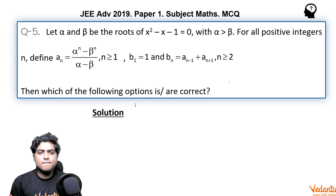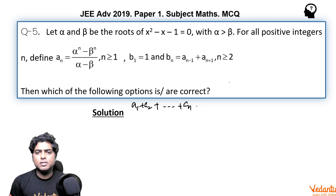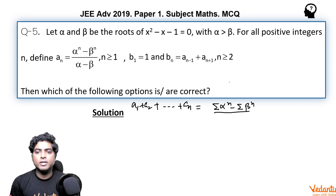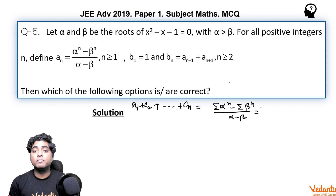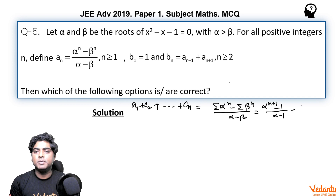I can write a_1 + a_2 + ... + a_n as (Σα^n - Σβ^n) / (α - β), where the sigma runs from 1 to n. Using the formula for the sum of a geometric progression, I can write Σα^n as α(α^n - 1)/(α - 1).